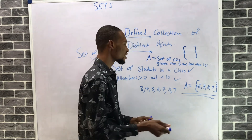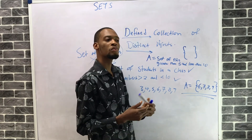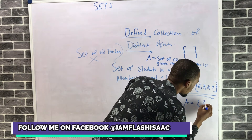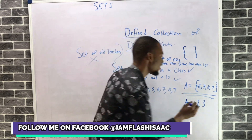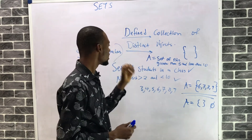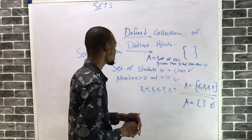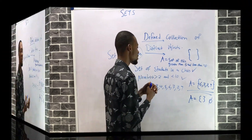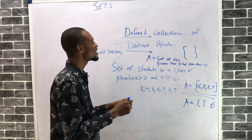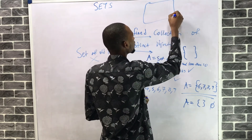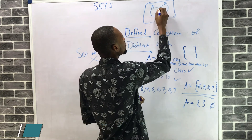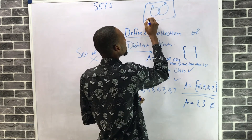We can also have an empty set. For example, 'set of people who will never die' equals an empty set — there are no elements. A set is a defined collection of distinct objects represented with curly brackets. A Venn diagram is a diagram you can use to represent sets, showing set A, set B, their similarity, and the universal set.